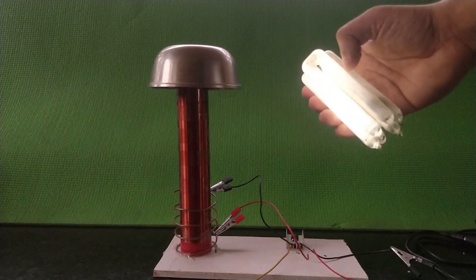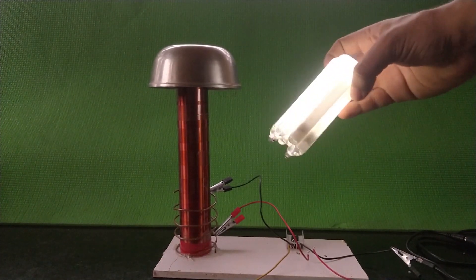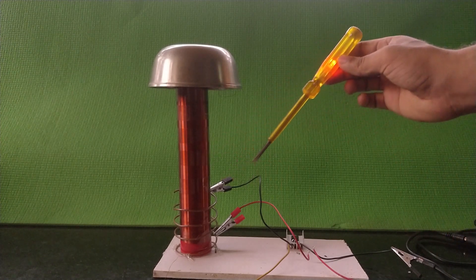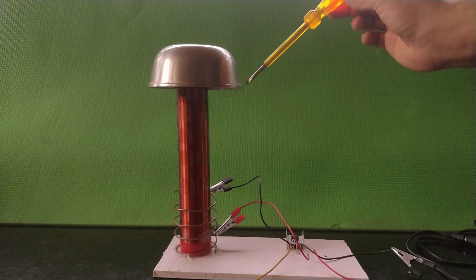And when this photon hits the phosphorus coating inside the tube it will get converted into visible light. So in this way it can illuminate any fluorescent bulb that is kept in close proximity with the Tesla coil.